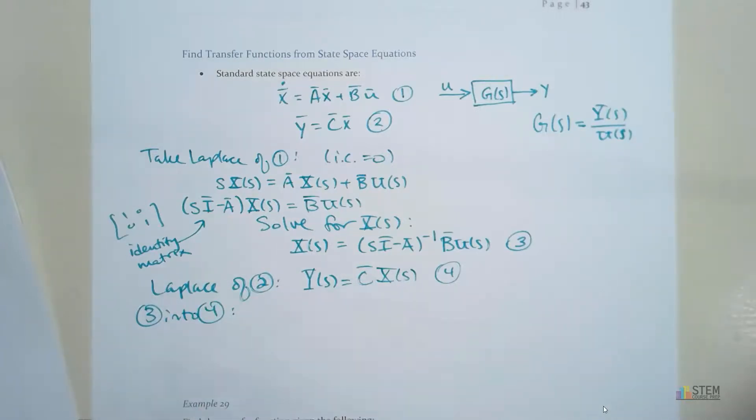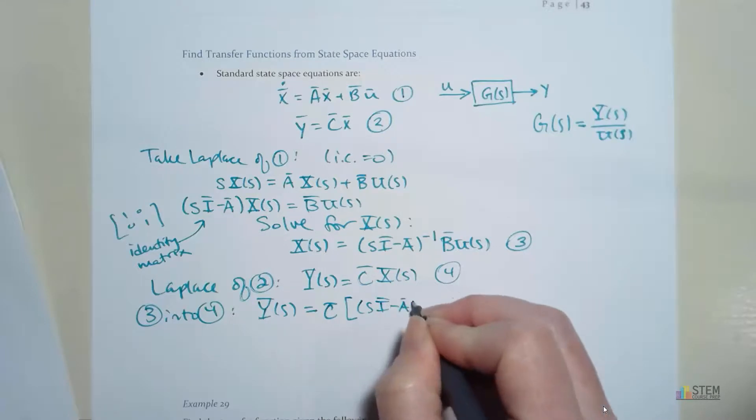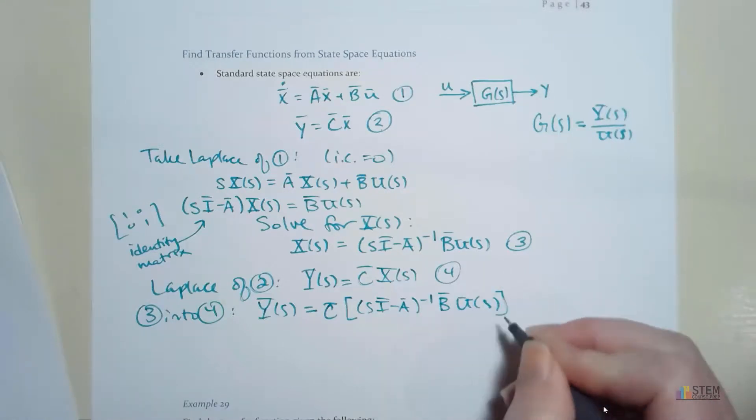And if we do that we can write Y of S equals C times SI minus A inverse times B times U of S. Close that bracket. All right. So now we've got this.